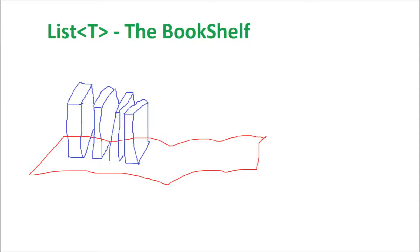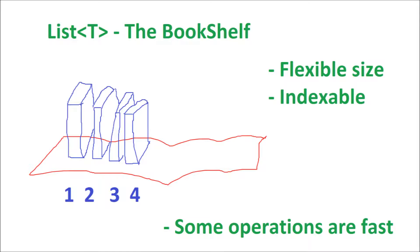The second ordered collection is a list. You can think of a list like a bookshelf. It's pretty easy to find a book by its index. It's easy to change the number of the books on the shelf simply by adding or removing books.